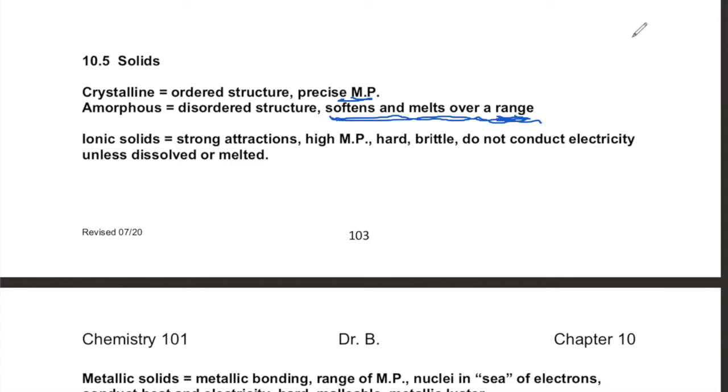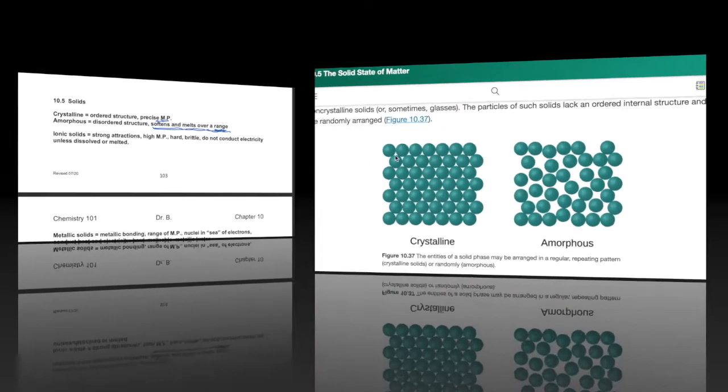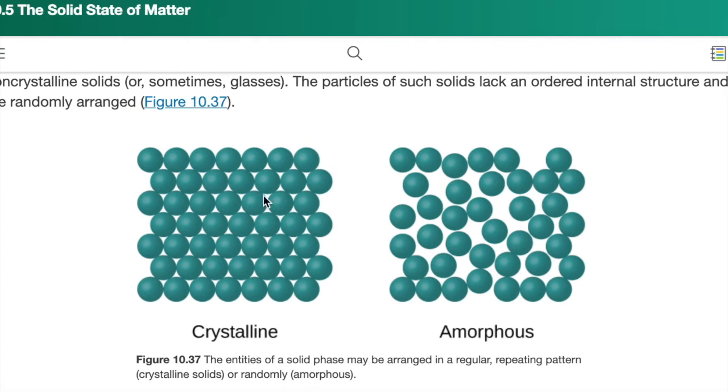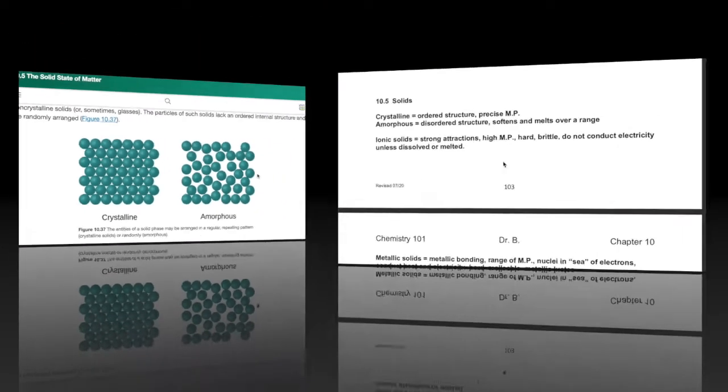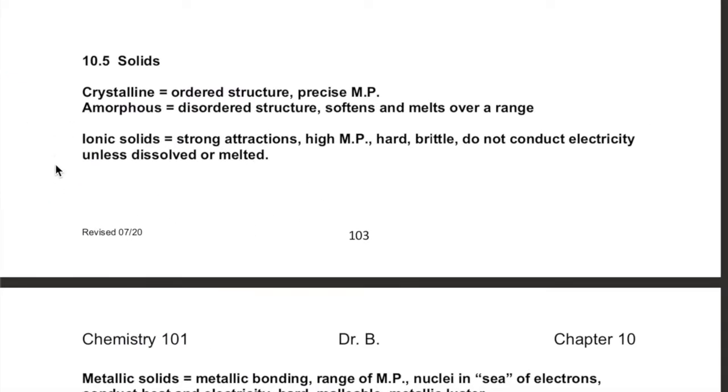So let's take a look at what these look like. Here is a diagram in your textbook trying to illustrate the difference between an ordered crystalline structure and a more amorphous structure that has a little bit of disordered shape to it. The other types of structures that are detailed here in this section are all types of crystalline ordered structures.